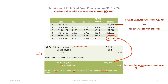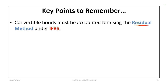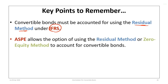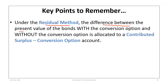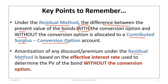Now some key points to remember. Convertible bonds must be accounted for using the residual method under IFRS. ASPE allows the option of using the residual method or the zero equity approach — requirement one was applicable to both IFRS and ASPE, while requirement two was applicable only to ASPE. Under the residual method, the difference between the present value of the bonds with and without the conversion option is allocated to the contributed surplus — conversion option account, so we need to calculate both present values. Amortization of any premium or discount is based on the effective interest rate using the PV without the conversion option.